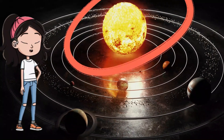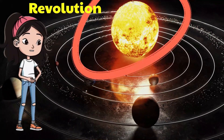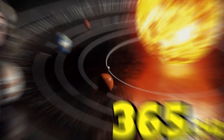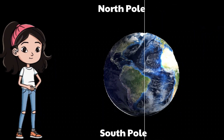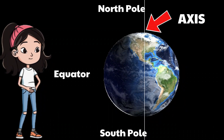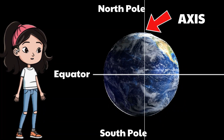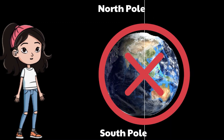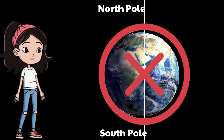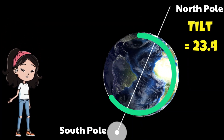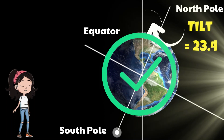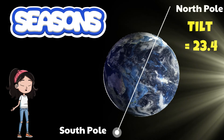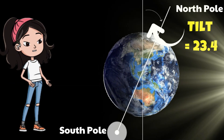This journey, known as a revolution, takes one full year — 365 days. Now comes the exciting part: an invisible line runs through earth called the axis, from the north pole to the south pole. The earth's axis isn't straight up and down — it's tilted at an angle of about 23.5 degrees. This tilt, combined with the earth's rotation and its revolution orbiting around the sun, gives us day, night, and — you guessed it — seasons.